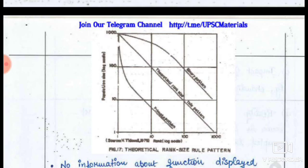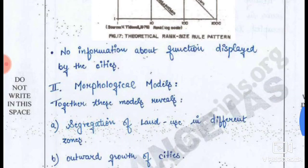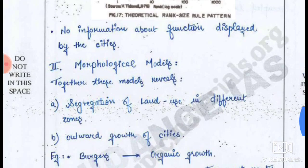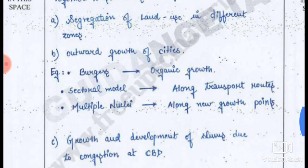The rank-size rule also neglects satellite towns and state capitals. As seen in this diagram of the rank-size rule, there is no information about the functional dysfunction displayed by cities.